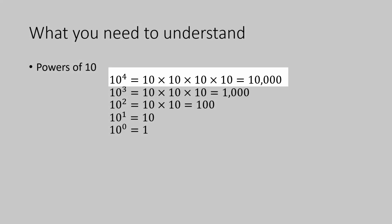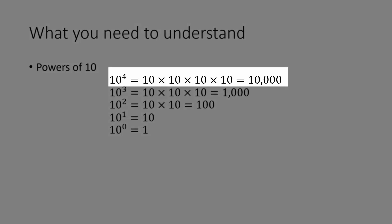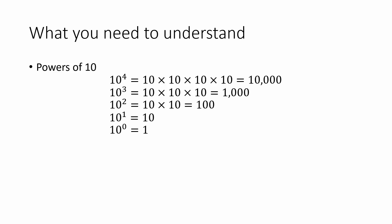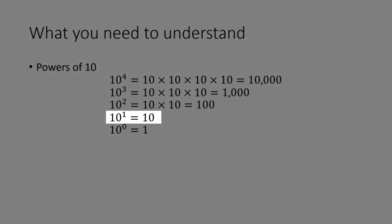So you might already be familiar with the fact that when you raise 10 to a power, that means that you're multiplying it times itself. For example, 10 to the 4th is 10 multiplied by itself 4 times, which gives you 10,000. 10 to the 3rd is 10 times itself 3 times, and so on. This means that 10 to the 1st power is just 10.